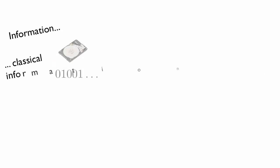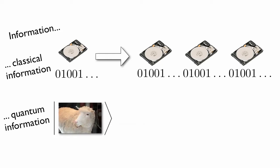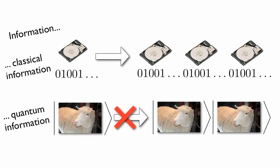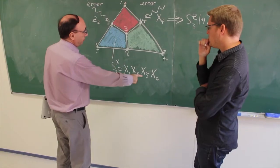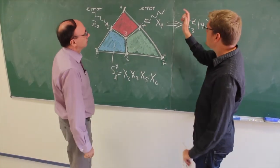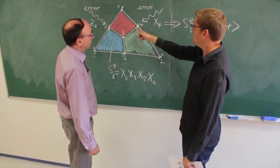To achieve a robust computer, we need to encode the information in a redundant way. However, since we cannot simply clone, that means copy, quantum states, we need to distribute the information in highly entangled states of several quantum particles.